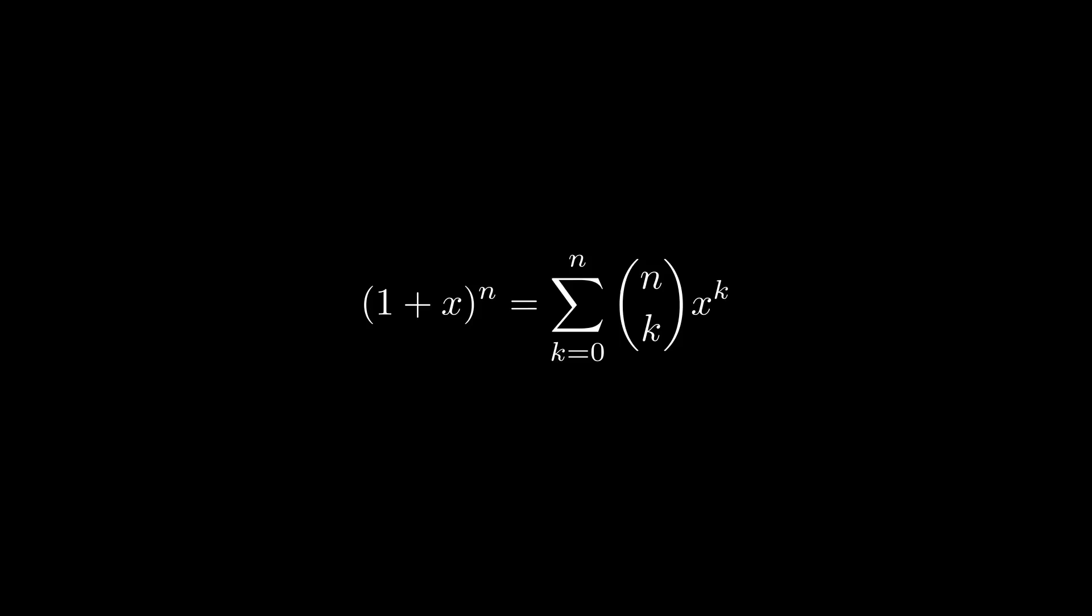But basically, in the formula, this n choose k term means the number of ways of choosing k objects from a set of size n. It's also equal to the coefficient on x to the k when you expand 1 plus x to the n. You can see that by choosing k x's from these n factors. Let's get back to what we're trying to prove. We want to show that this sequence is monotonically increasing, which means that each term is greater than or equal to the previous term.